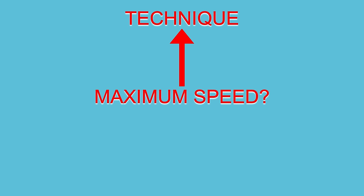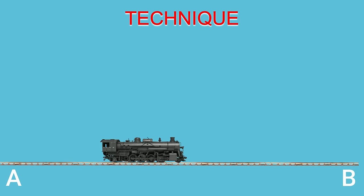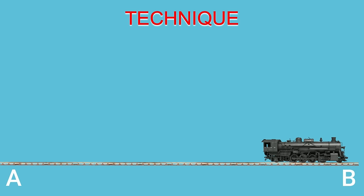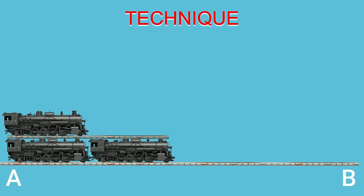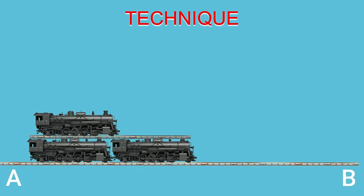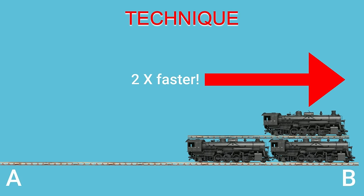Consider this train traveling from point A to point B at a constant speed. Now, what if the train instead traveled the same speed but on top of another train also traveling the same speed? It would get to point B twice as fast.